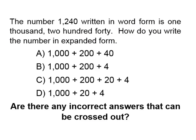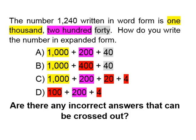Let's see if there are any answers we can cross out that are incorrect — and another word for incorrect is wrong. Wrong is a synonym for incorrect. We are going to highlight our word form and then match those with our answer choices. One thousand is highlighted in yellow, two hundred is highlighted in pink, and forty is highlighted in gray.